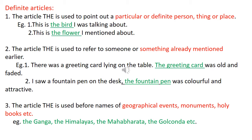Now we are going to see the definite article — that is, The. The article The is used to point out a particular or definite person, thing, or place. For example: 'This is the bird I was talking about' — I am talking about this particular bird. Second example: 'This is the flower I mentioned about' — talking about this specific flower I mentioned.